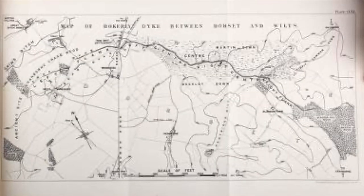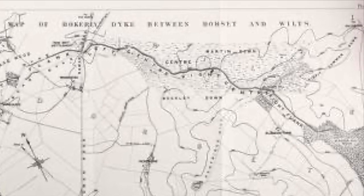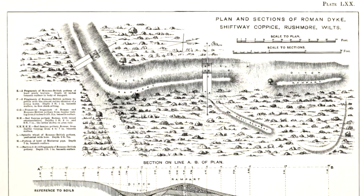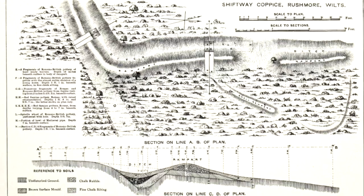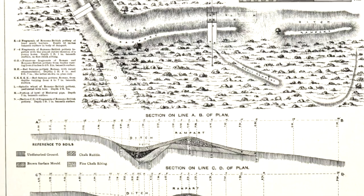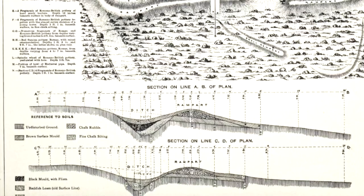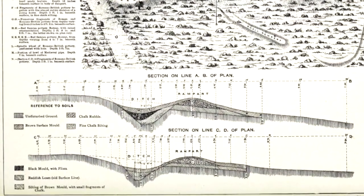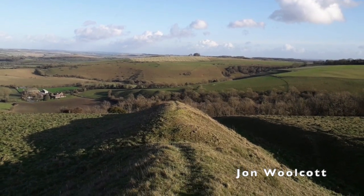His most extensive fieldwork involved a study of the Bokerly Dyke at the border between Dorset and Hampshire. This is a sinuous earthwork that extends almost six kilometres in length. His fieldwork helped to establish that it was probably constructed in the Bronze Age or Early Iron Age, and that it was cut through by the Ackling Dyke, a Roman road constructed in the first century between Old Sarum and Badbury Rings. The original purpose of the dike may have been as a territorial boundary — and it's interesting to note that it continues to serve this purpose today, as the boundary between two counties.